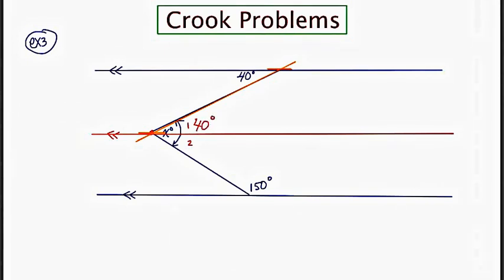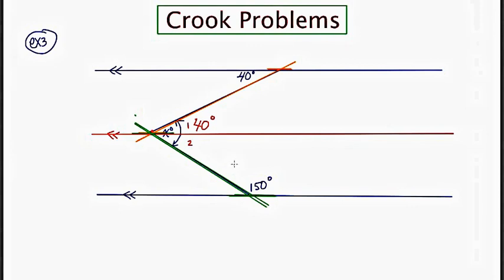Moving to the bottom of the page in green: angle two and the angle marked 150 live on the same side of the transversal — both on the right side — and they're in the interior region. So these are same side interior angles. If lines are parallel, same side interior angles are supplementary. The supplement of 150 is 30. So angle two is 30.